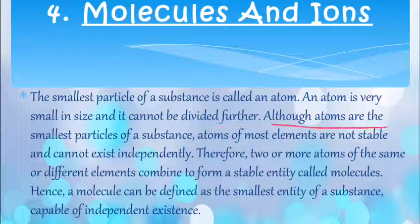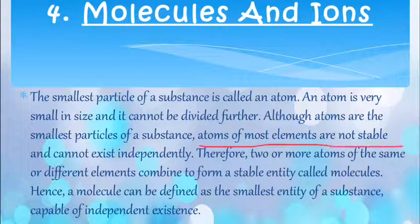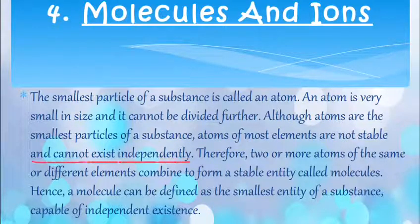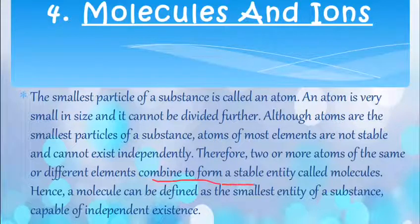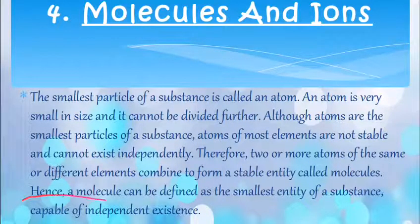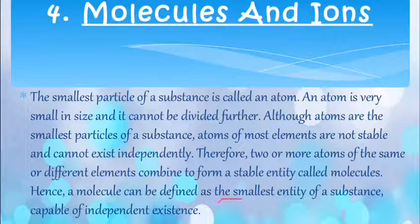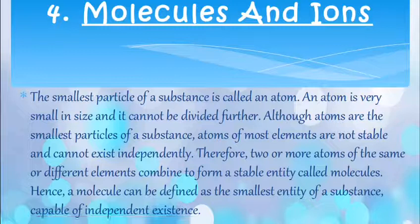Although atoms are the smallest particle of substance, atoms of most elements are not stable and cannot exist independently. Therefore, two or more atoms of same or different elements combine to form stable entity and these are called molecules. Hence, molecule can be defined as the smallest entity of a substance which is capable of independent existence.